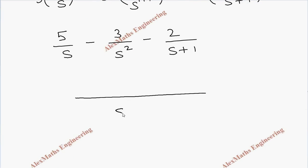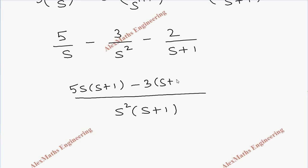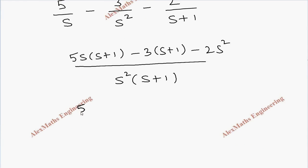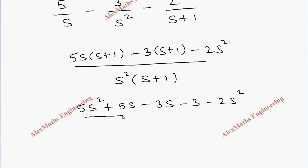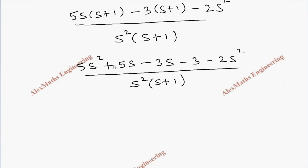Taking LCM as s²(s + 1): 5 is multiplied by s(s + 1), 3 is multiplied by (s + 1), and 2 is multiplied by s². The numerator simplifies to 5s² + 5s - 3s - 3 - 2s², combining like terms gives 3s² + 2s - 3, all divided by s²(s + 1).